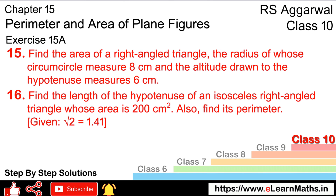Let's do question number 15 of exercise 15a, that is perimeter and area of a plane figure. Question number 15 is: find the area of a right-angled triangle, the radius of whose circumcircle measures 8 cm and the altitude drawn to the hypotenuse measures 6 cm.